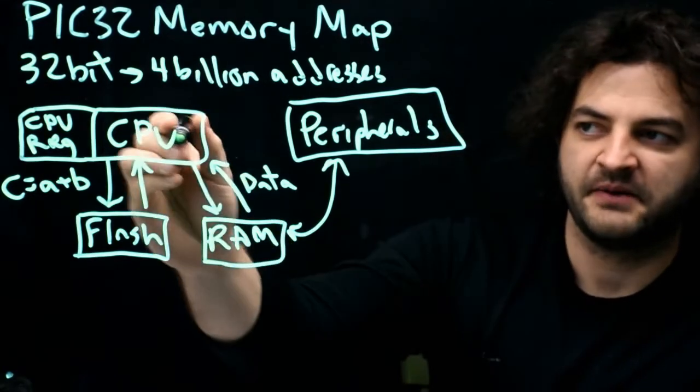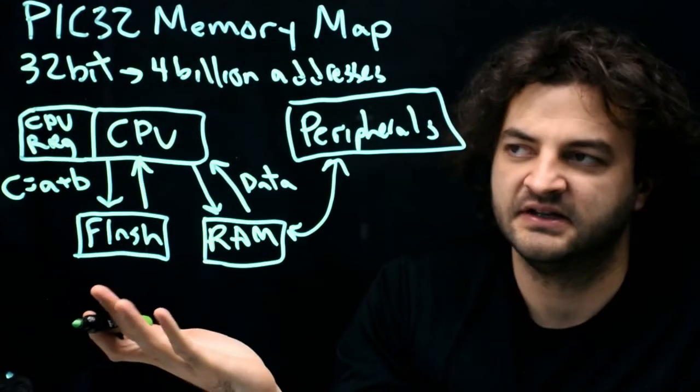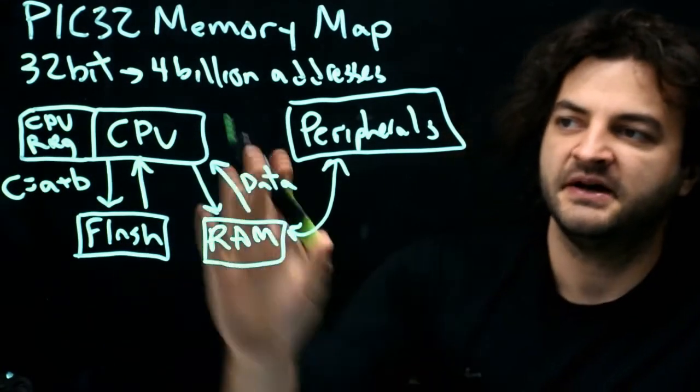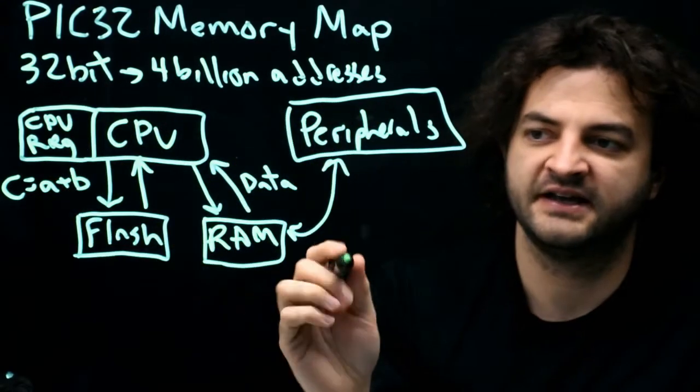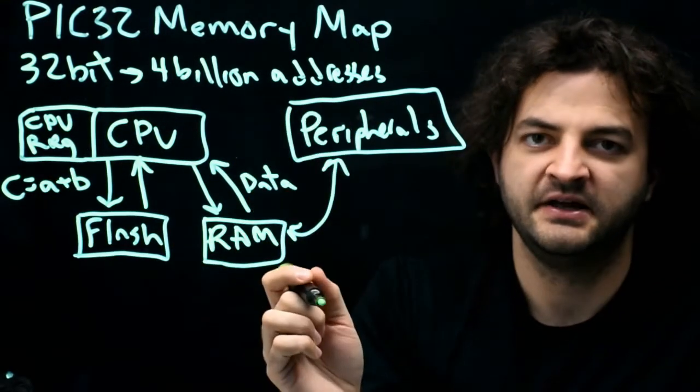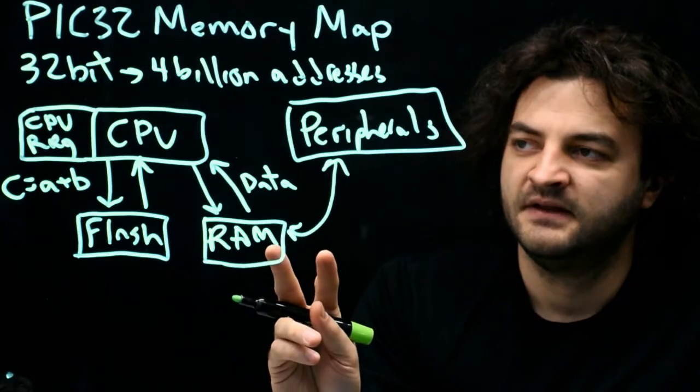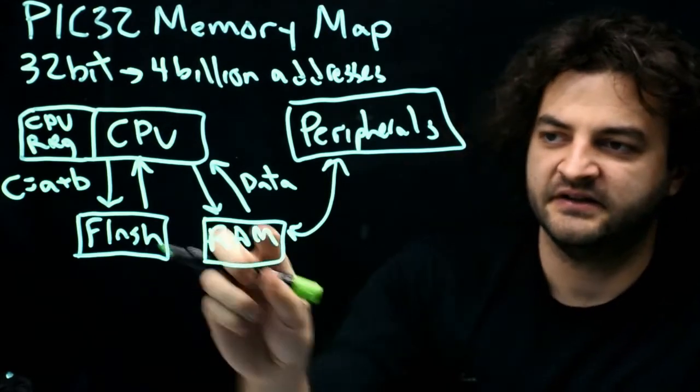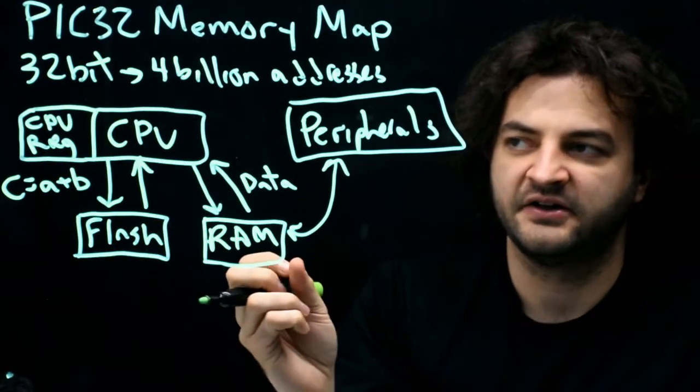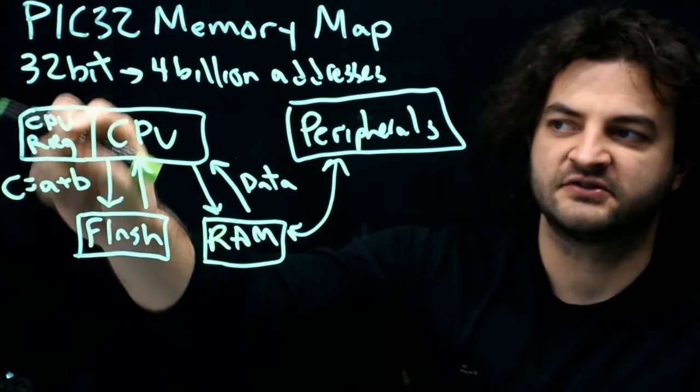Because why go get it from RAM? I still have it the last time I used it in the CPU register. But in the background, the peripheral has changed that value in RAM. Now I have two instances of the same variable. It exists in RAM and another value of it exists in the CPU register, but that one's old.